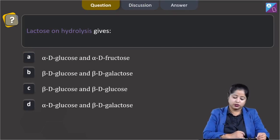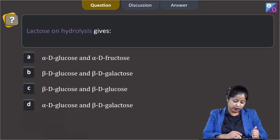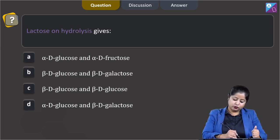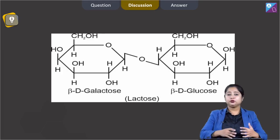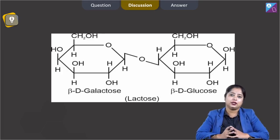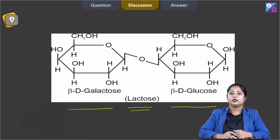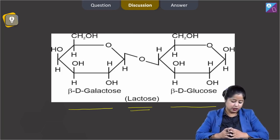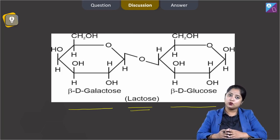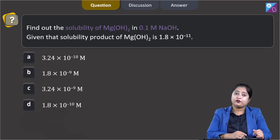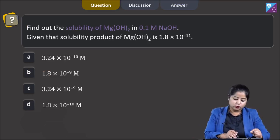Next question: lactose on hydrolysis gives — (a) alpha-D glucose and alpha-D fructose, (b) beta-D glucose and beta-D galactose, (c) beta-D glucose and beta-D glucose, or (d) alpha-D glucose and beta-D galactose? From the structure of lactose, we can clearly see it is composed of beta-D galactose and beta-D glucose, so the correct answer is option B.